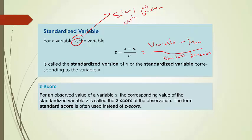So for an observed variable x, the corresponding value of the standard variable z is called a z-score of the observation. The term standard score is often used instead of z-score, but in this class I will always say z-score. And basically what a z-score tells you is how far you are from the mean in terms of the number of standard deviations. So it's the variable value minus the mean divided by the standard deviation.